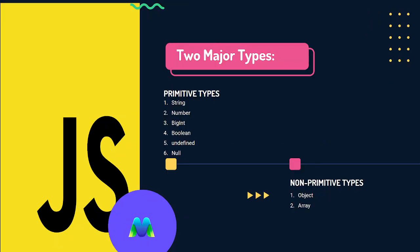In JavaScript, there are major types: primitive and non-primitive. Primitive type includes string, number, BigInt — BigInt is a bigger number.